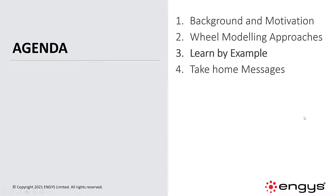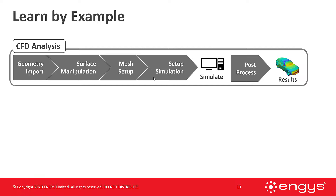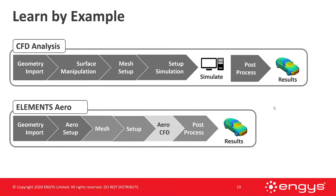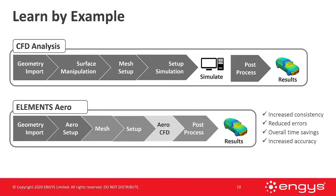Now that I've identified the different approaches, let me go through an example. A typical CFD analysis requires geometry import, surface manipulation, mesh setup, simulation setup, simulation, post-processing, and results. However, with Elements there's an aero wizard — you bring in the geometry, categorize it and perform an aero setup, then launch the applications for mesh setup, aero CFD, and post-processing. Most of the process is automated, which increases consistency between runs and between team members, reduces errors, saves time, and increases accuracy per simulation.